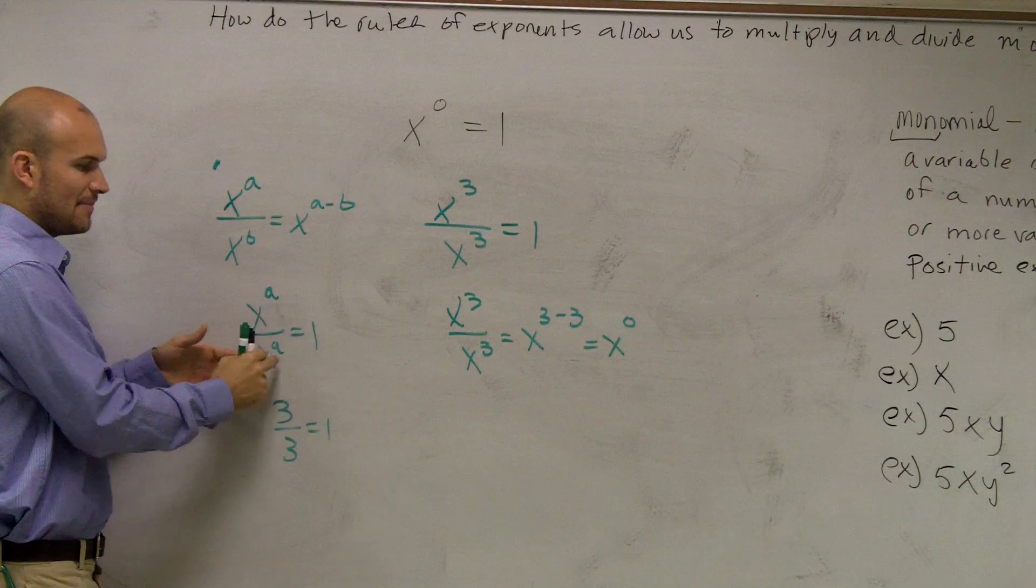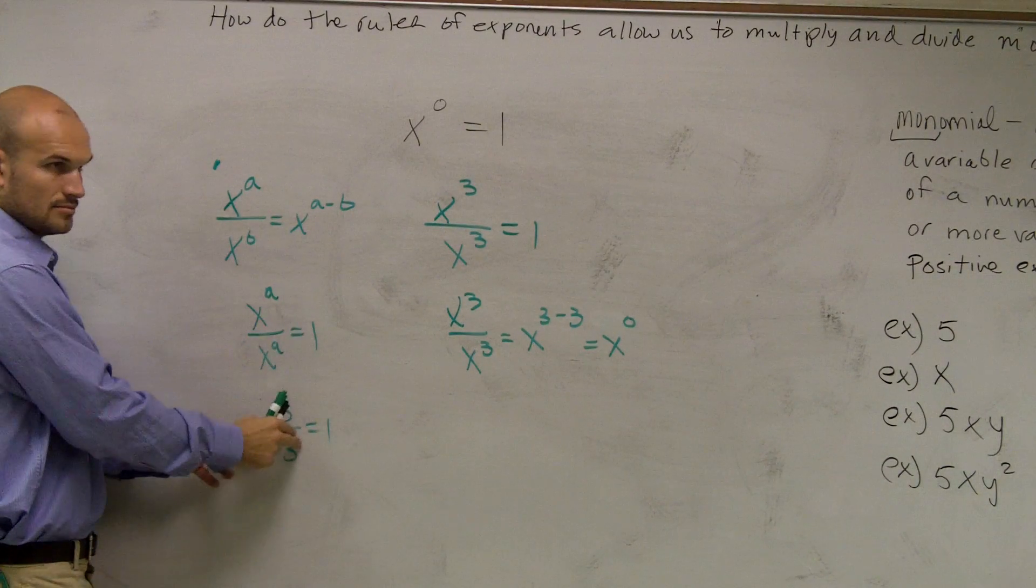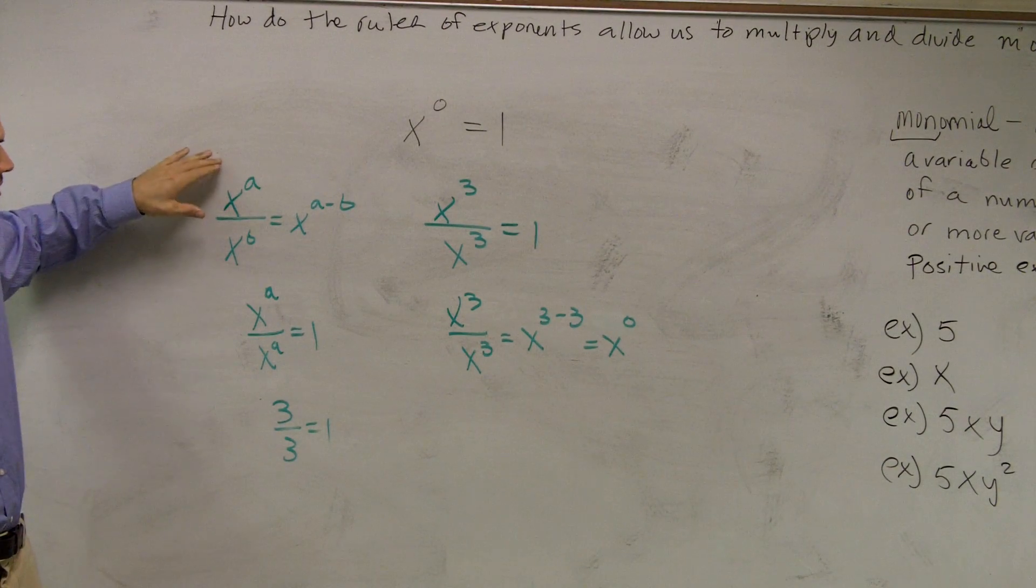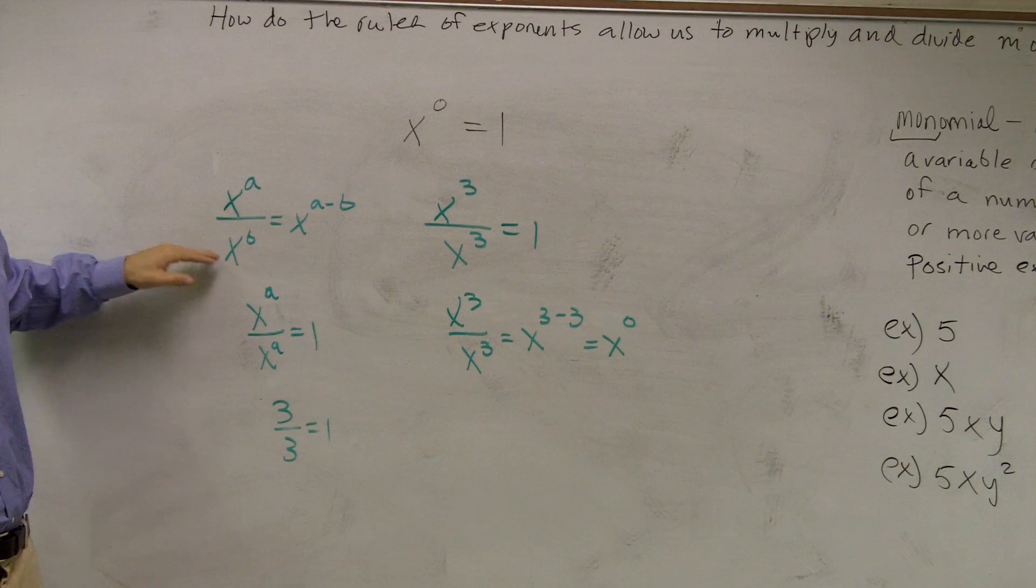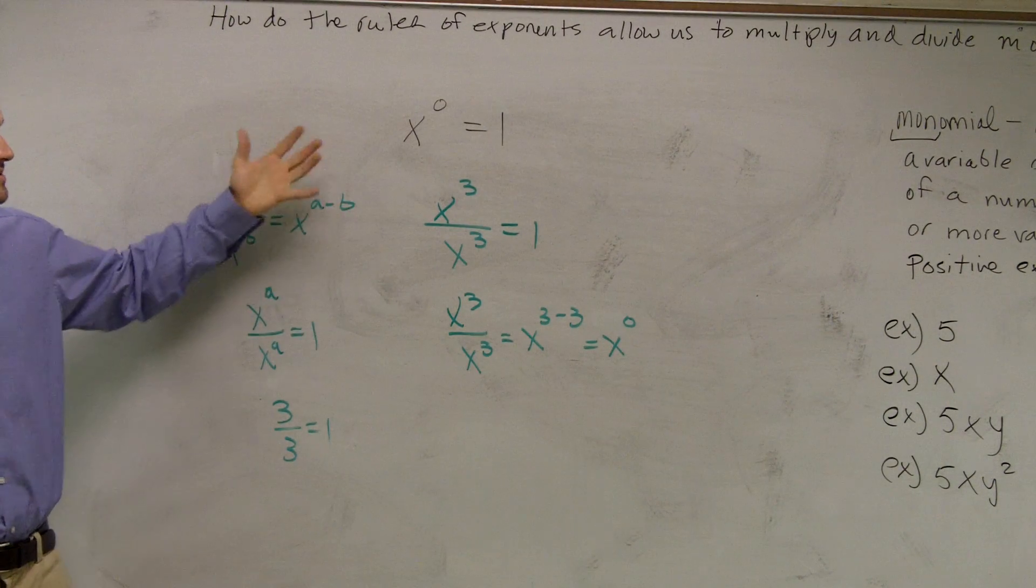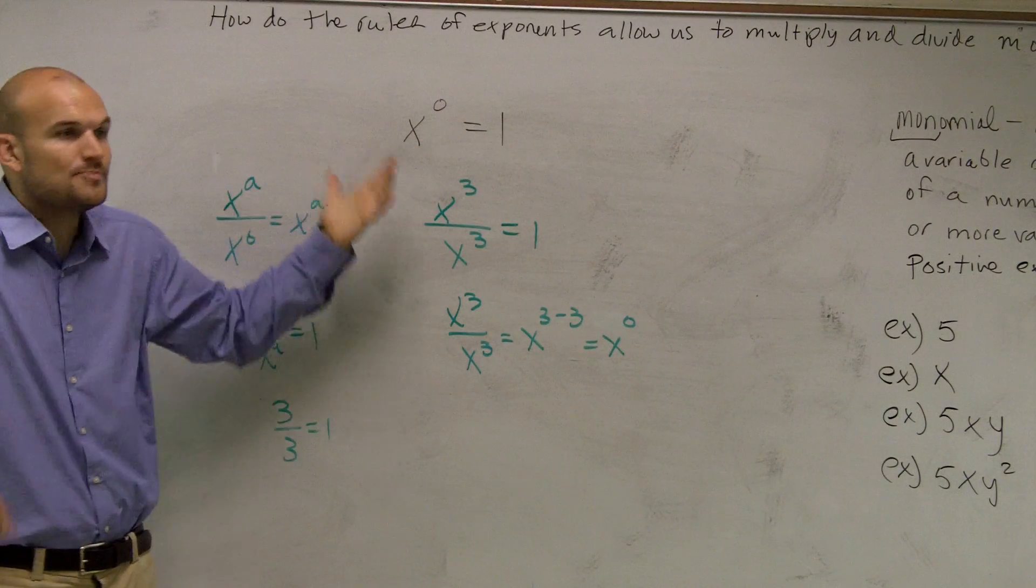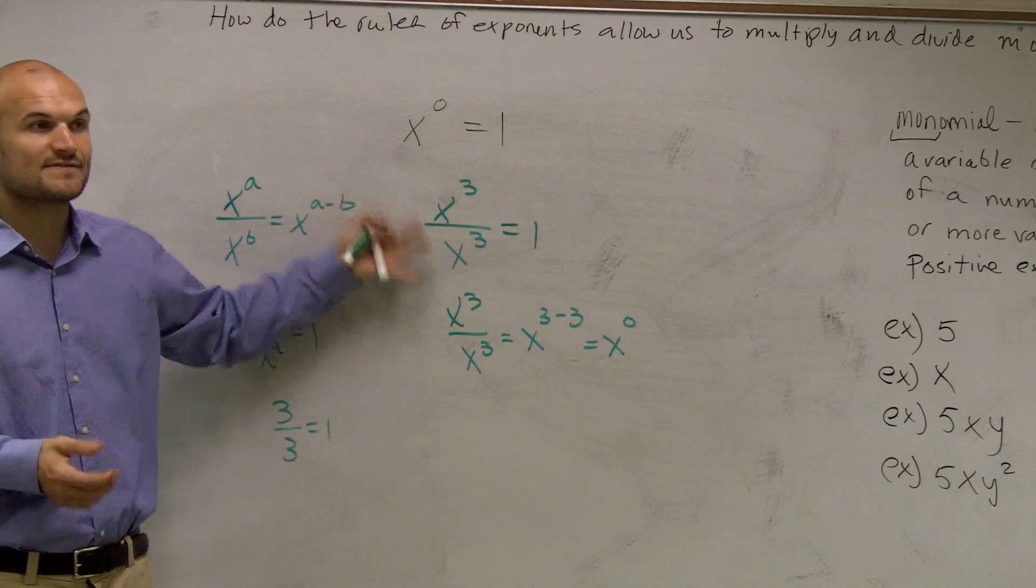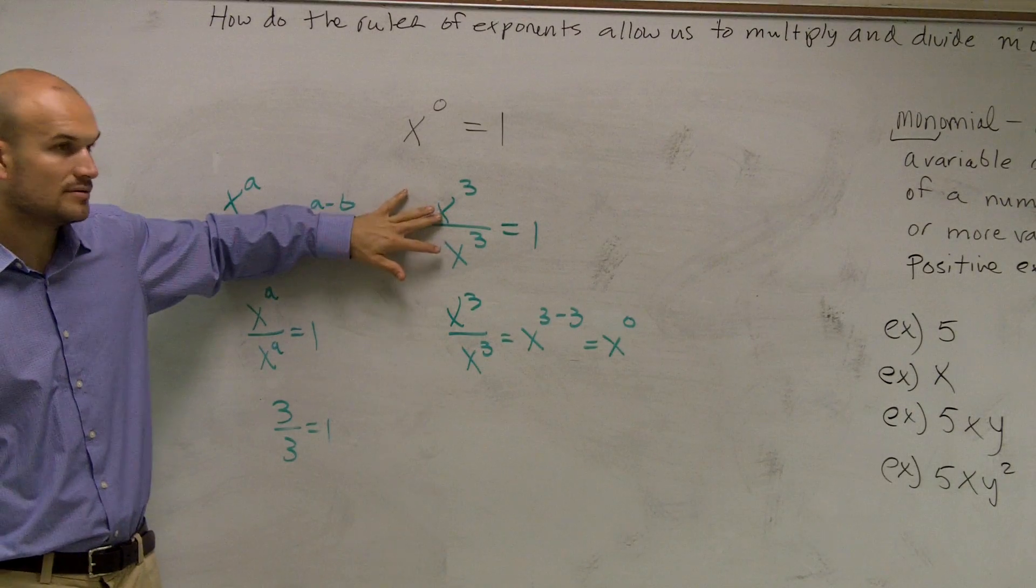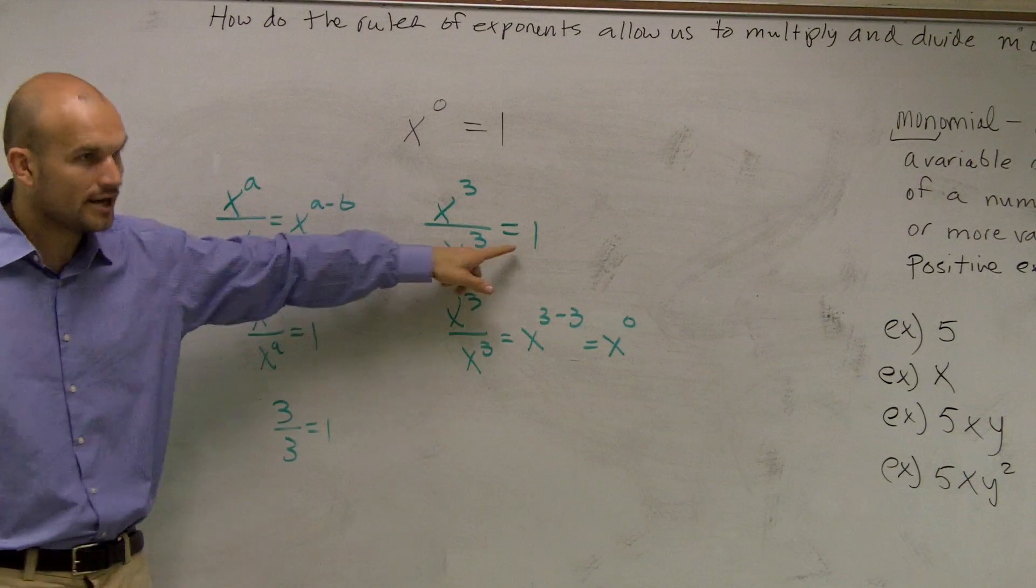You understand any number divided by itself equals 1, right? Then, the other thing is, any time you have a number with an exponent divided by that same base with an exponent, you subtract them. So all I'm saying is, let's just pick any number. It doesn't matter, as long as they have the same base.